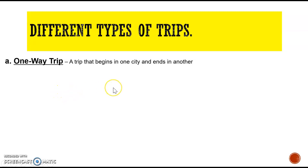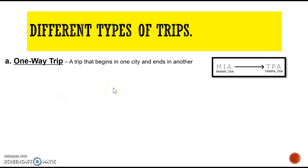A one-way trip is a trip that begins in one city and ends in another. For example, Miami going to Tampa, USA — meaning the trip begins in one city, which is Miami, and ends in another city, Tampa.